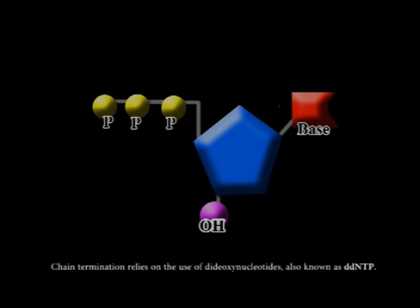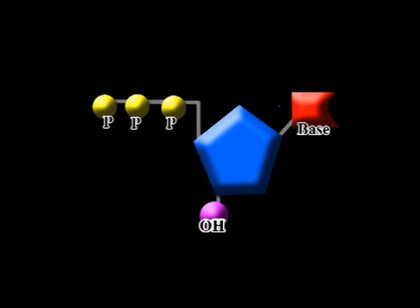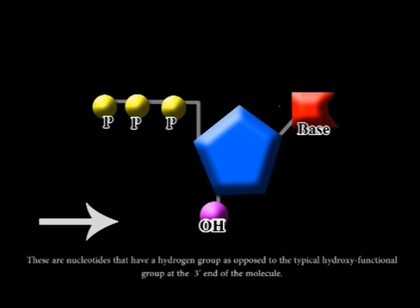Chain termination relies on the use of dideoxynucleotides, also known as DDNTP. These are nucleotides that have a hydrogen group, as opposed to the typical hydroxy functional group at the three prime end of the molecule.